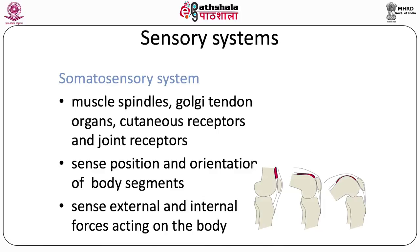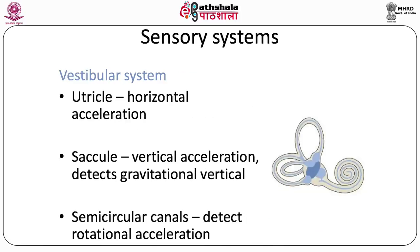The efferents of the proprioceptors are 1a efferents. These travel through the dorsal column in the spinal cord and go to higher postural centers in the brainstem and cerebral cortex.